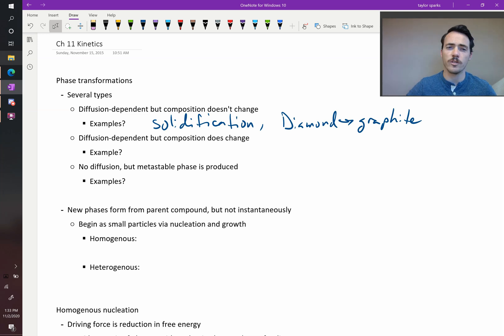Now a second type of phase transformation is diffusion-dependent but there is a change in the composition. Now we've seen lots of examples of this. For example, the eutectic reaction. In a eutectic reaction you start with a liquid at one composition and it splits into two solids at different compositions. So there has been a change in composition. Diffusion was present.